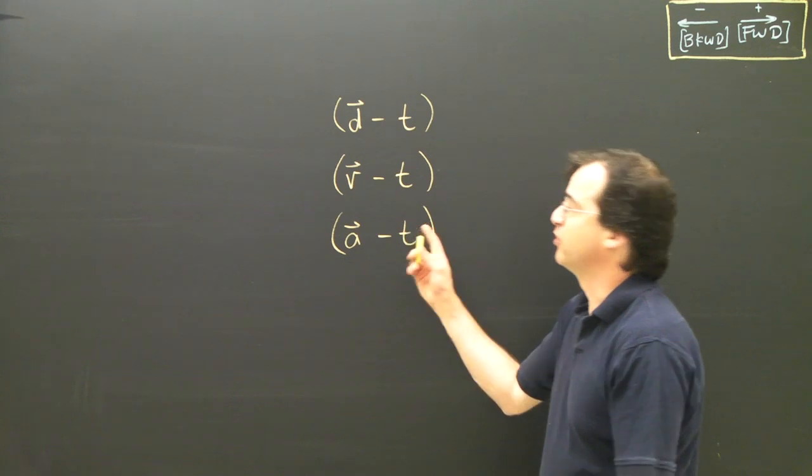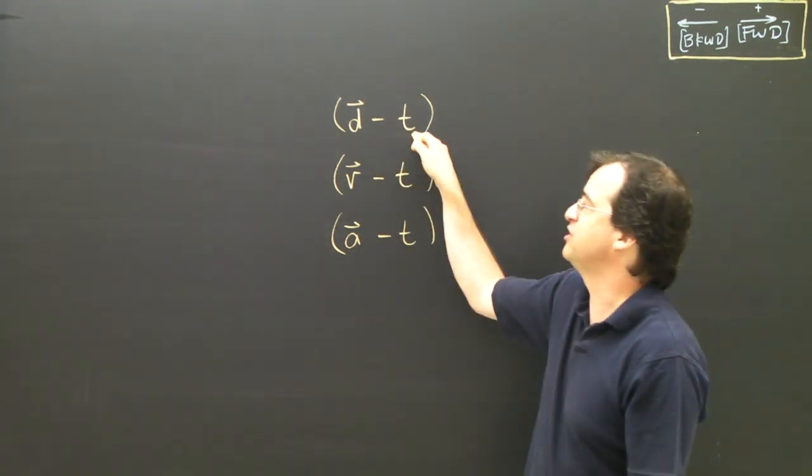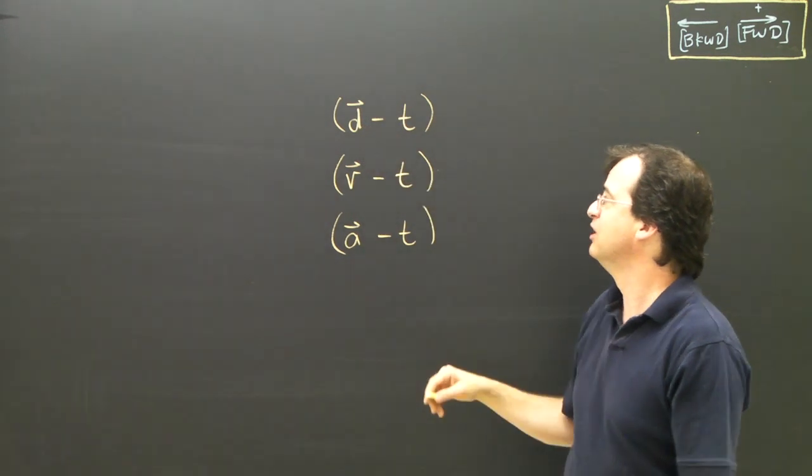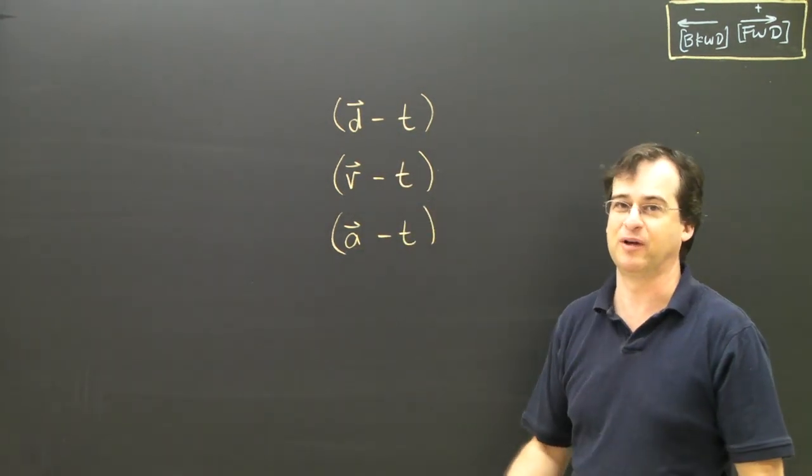This is probably a good time to do a short summary of graphing. We've looked at position-time graphs, we call them DT graphs, but it's really a position-time graph. We looked at velocity-time graphs and we looked at acceleration-time graphs.